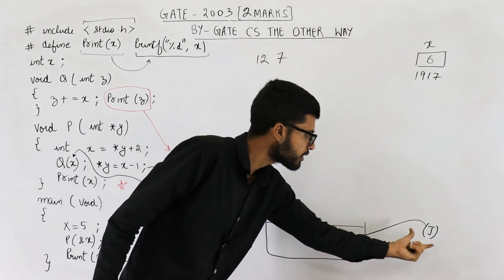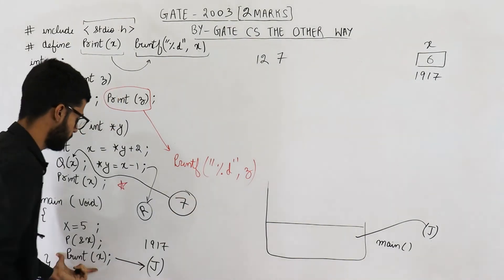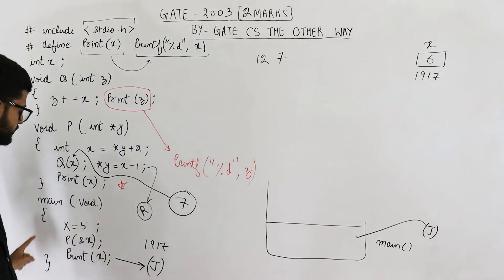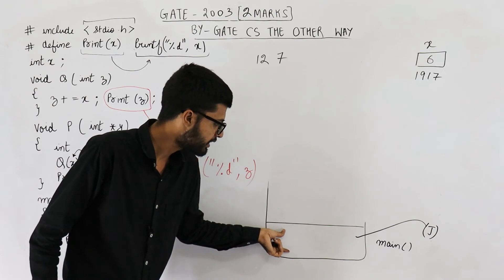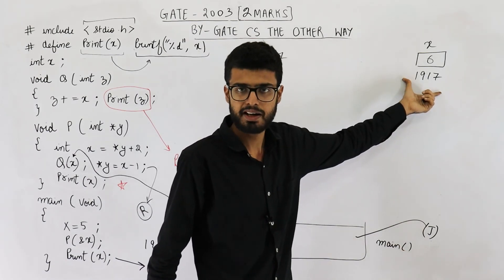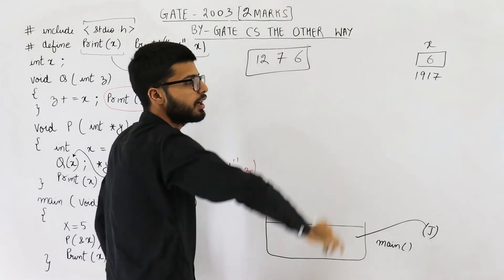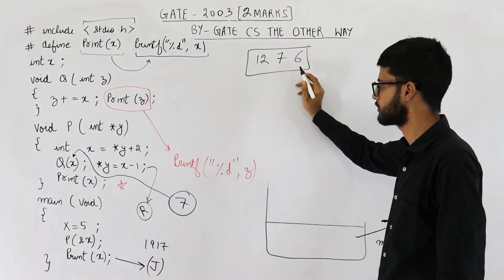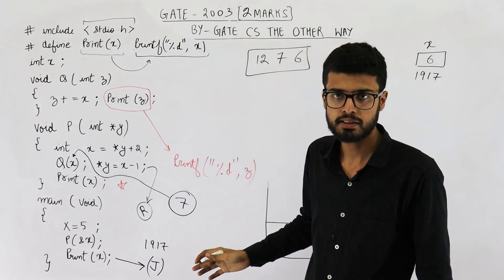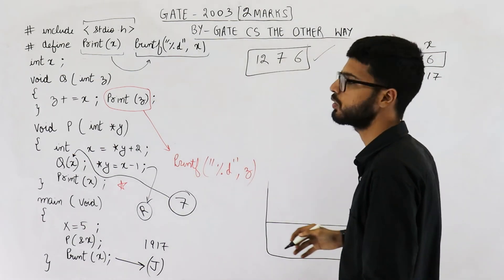Coming back to main function, we resume from line number J. Line J says printf x. We are inside main — looking in the activation record, there is no local variable x. So we look in the data section. The global variable X has value 6. So 6 is printed. This gives us the final output: 12, 7, 6 — that is 1276. After completely executing this program, the output we get is 1276.